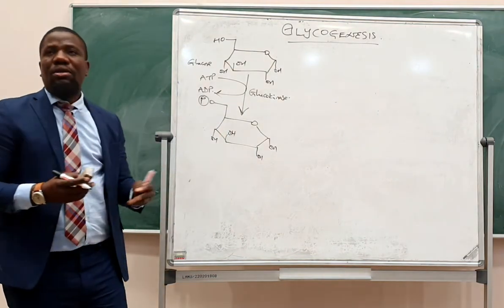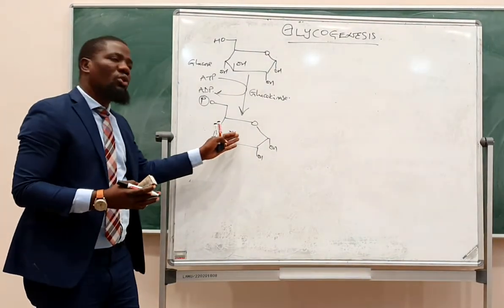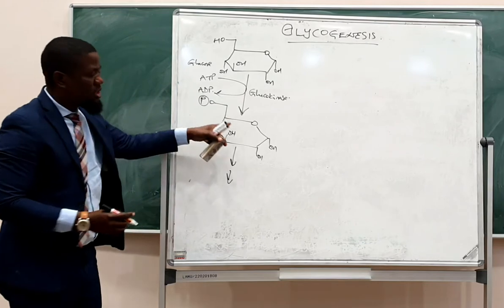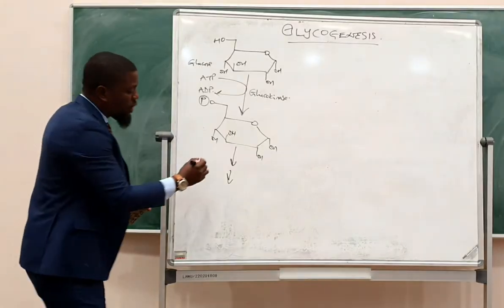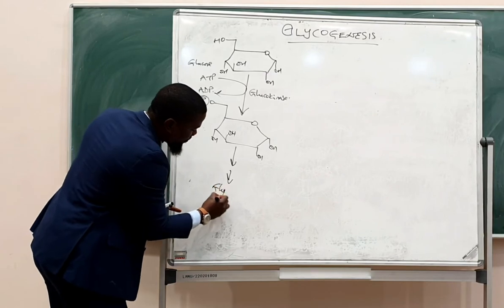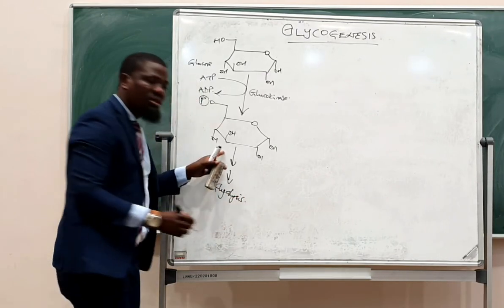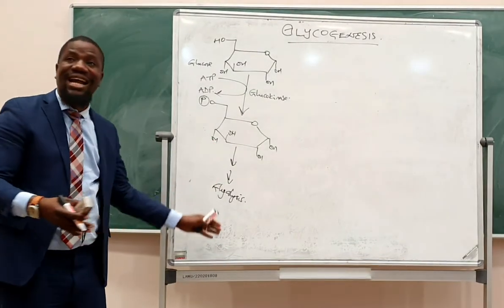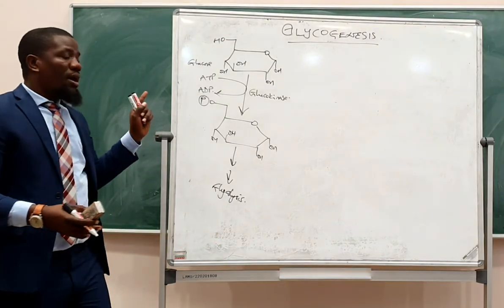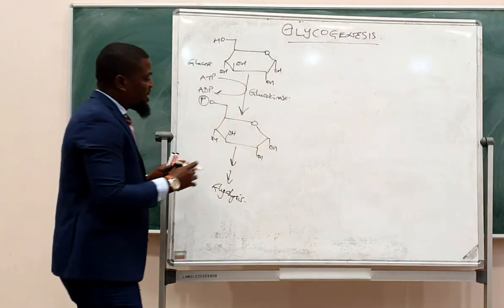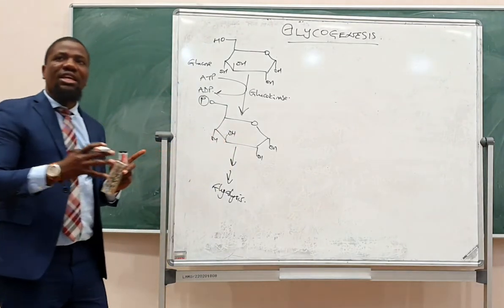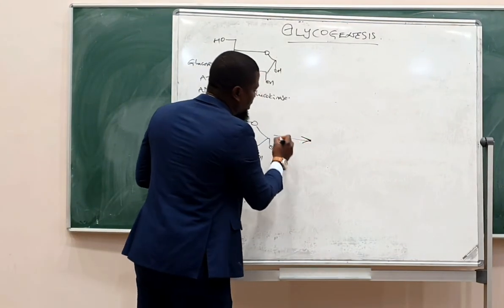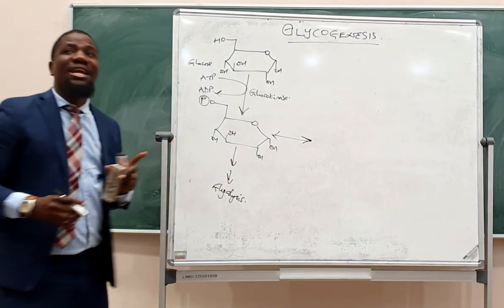With glucose-6-phosphate produced by glucokinase in the liver, you know that glycolysis is also continuing — glucose-6-phosphate goes down the glycolytic pathway, converted to fructose-6-phosphate, fructose-1,6-bisphosphate, and onward to produce pyruvate. At the same time, this glucose-6-phosphate is going to undergo another reaction toward glycogen synthesis, where glucose-6-phosphate is isomerized to glucose-1-phosphate.